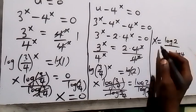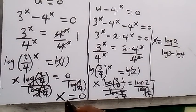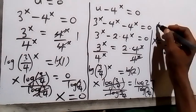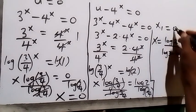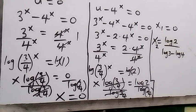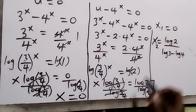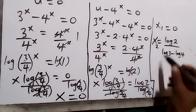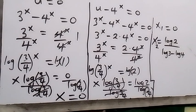So therefore we conclude that x₁ equals 0 and x₂ equals log 2 divided by (log 3 minus log 4). We can confirm these solutions satisfy the original problem. Thank you for watching — please share this video, subscribe to my channel, turn the notification bell on, see you next class, bye for now.